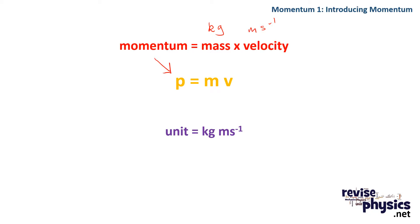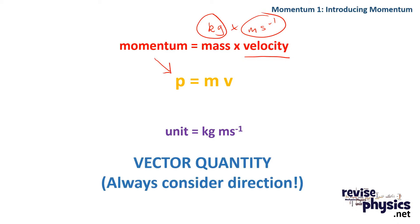Because we're dealing with velocity, momentum, like velocity, is a vector quantity. So later on when we start looking at the calculations for changes in momentum, we always need to consider its direction.